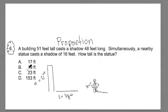Now I went ahead and I set up a model drawing. I always do the model drawing when given these problems because it helps me organize the information. So I started by drawing a building, and the building height is 51 feet and it has a shadow length of 48 feet. And I drew a statue here. Now I don't know what the height is of the statue. I do know that the shadow length is 16.